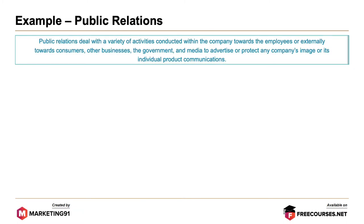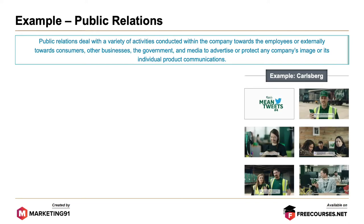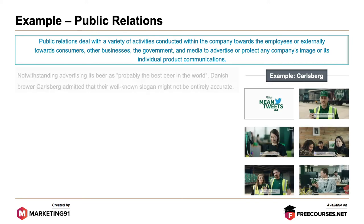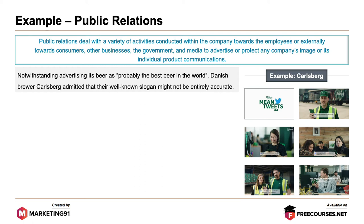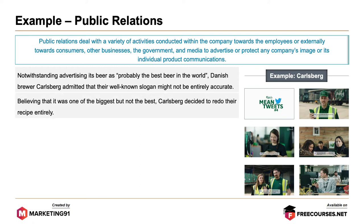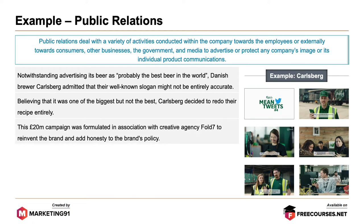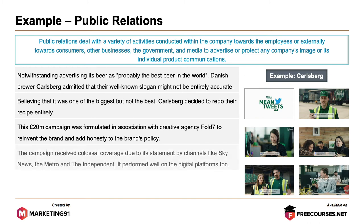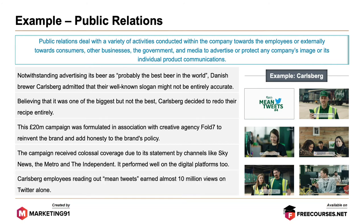Next, public relations. Public relations deals with a variety of activities conducted by the company towards employees or externally towards consumers, other businesses, the government, and media to advertise or protect a company's image or its individual product communications. The example here is again Carlsberg. Notwithstanding advertising its beer as 'probably the best beer in the world,' Carlsberg admitted that their well-known slogan might not entirely be accurate. Believing it was one of the biggest but not the best, Carlsberg decided to redo their recipe entirely. This £20 million campaign was formulated with creative agency Fold7 to reinvent the brand and add honesty to the brand's policy. The campaign received colossal coverage from Sky News, The Metro and The Independent, and Carlsberg's employees reading out mean tweets earned almost 10 million views on Twitter alone.